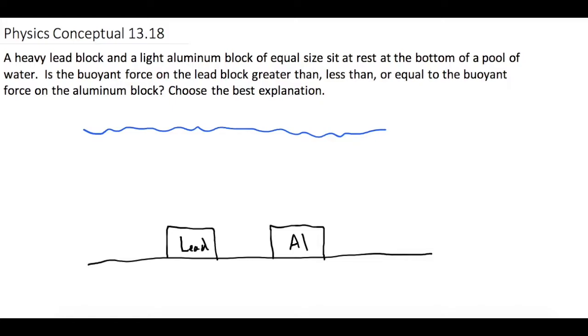So buoyant force is the amount of water or the volume of water that we are dispersing or pushing out. But due to gravity, all the little particles of water in here, they're all getting pulled down by gravity the same, right?